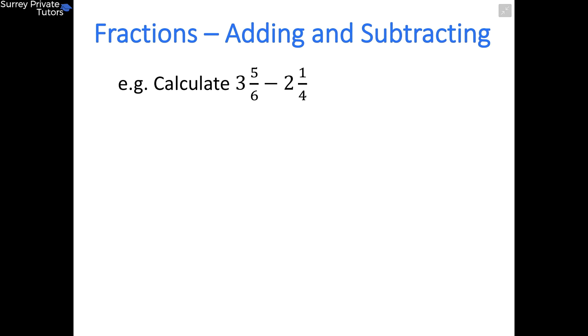Let's have a look at just one more example for adding and subtracting fractions. This one is now a subtraction. Same method as before, first we want to convert into improper fractions. So 3 and 5/6, 3 wholes have got 18 sixths, so 18 plus 5 gives you 23/6.